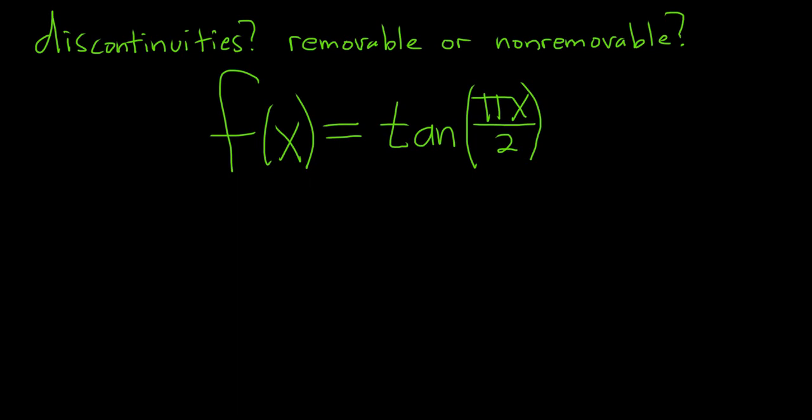Find the discontinuities and identify whether they are removable or non-removable. This is a trig function and it should have asymptotes. We know that vertical asymptotes are always non-removable, so all we have to do in this problem is find the asymptotes.